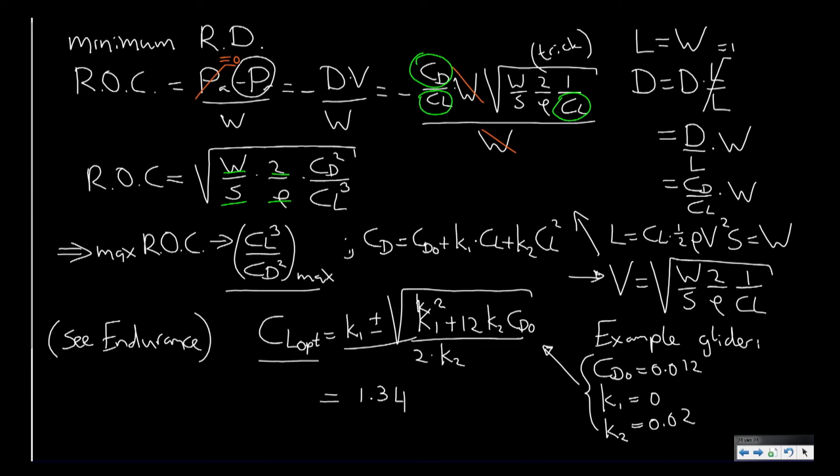So if we take the optimum CL we can calculate that the optimum airspeed is equal to the square root of the weight of the aircraft, which was 4000 N, divided by the wing surface area times 2 over the air density, which is 1.116 at 1000 meters altitude, times 1 over this optimum CL. So this should equal 23.2 meters per second.